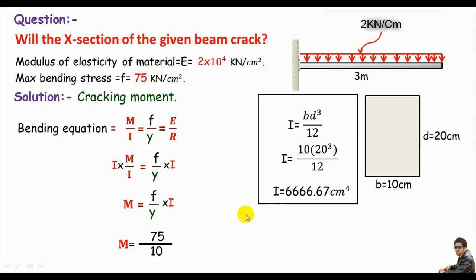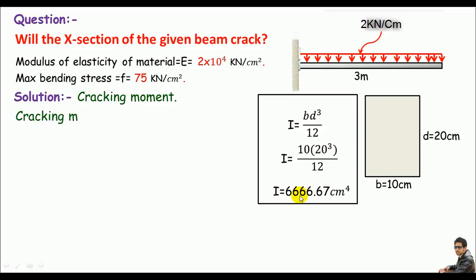The moment of inertia is given here, we can get 50,000 kN·cm. This is the cracking moment, so the cracking moment is 50,000 kN·cm. Now I need the moment caused by external load in the beam.